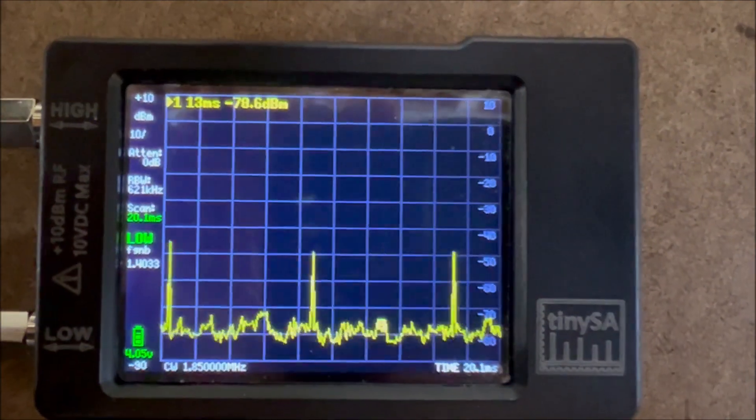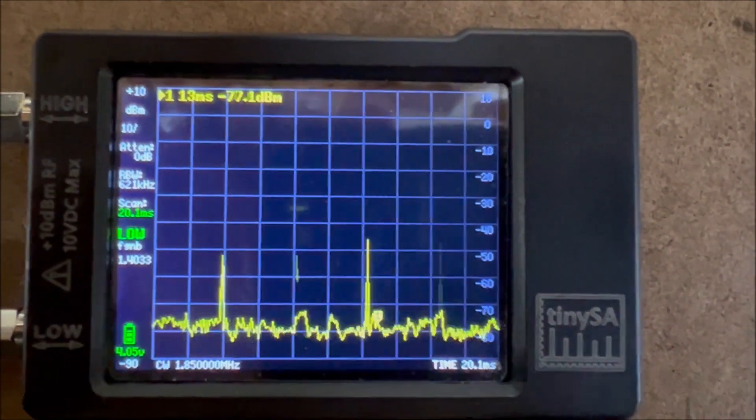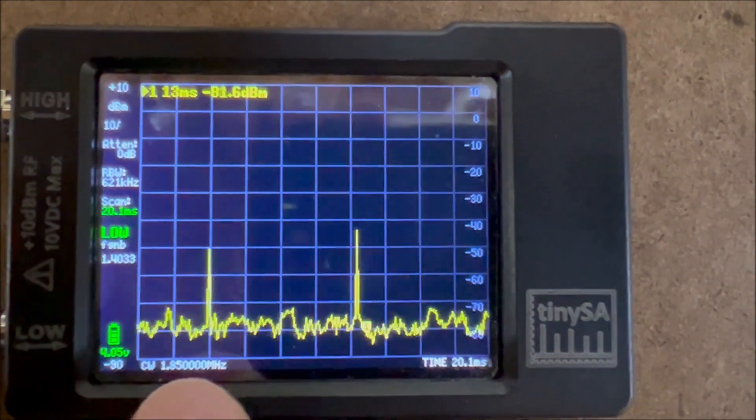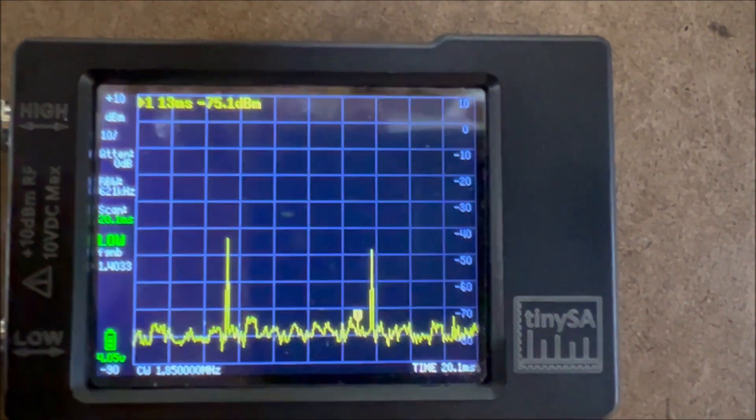I'm using the TinySA in the zero span mode, and so you can see I've got a frequency set for 1.85 MHz.